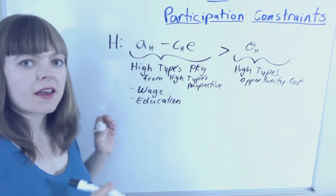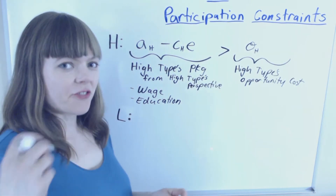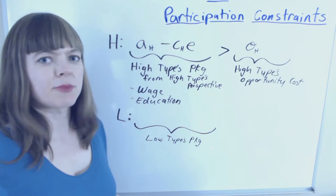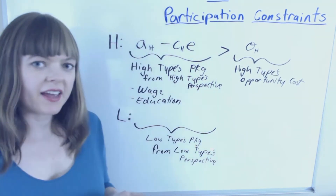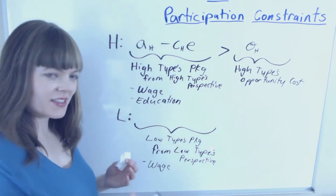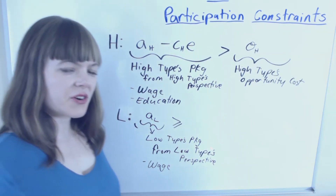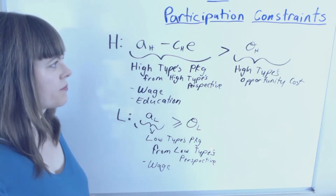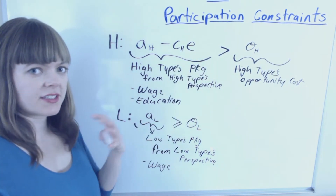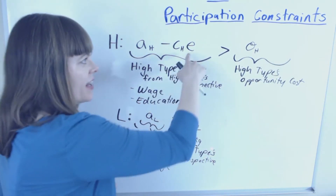Then we need to do the same thing from the perspective of the low productivity worker. The low type's package contains their wage — the lower wage — with no educational requirement associated with it. Their wage is equal to their productivity AL, and that needs to be greater than or equal to the low type's opportunity cost. This one is a little trivial. We want to keep in mind that we're eventually going to solve for E, so we'll use algebra to isolate E on one side of any inequality that contains it.